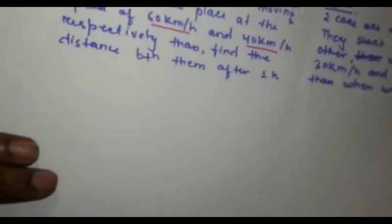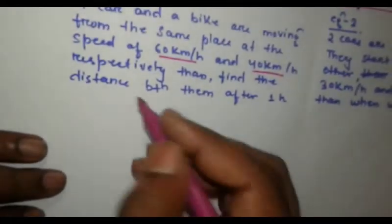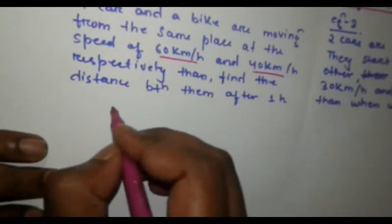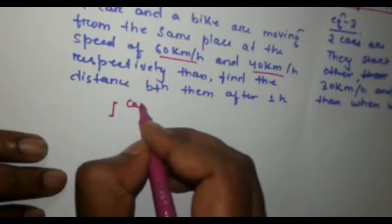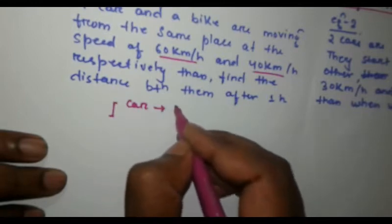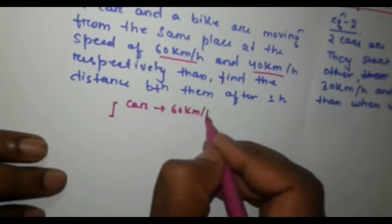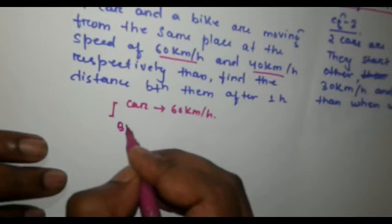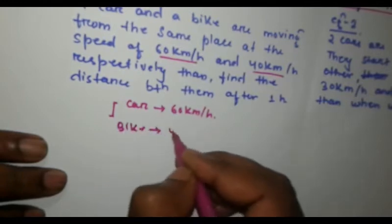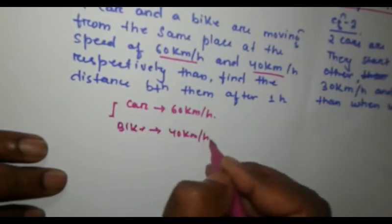Let's draw the diagram first. Here what is given that they are moving from the same place. One car with a speed of 60 km per hour and a bike with a speed of 40 km per hour.